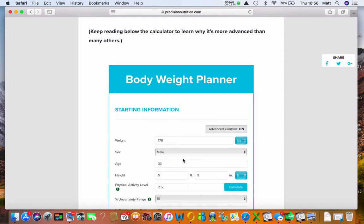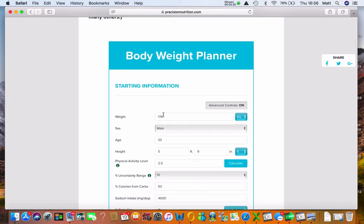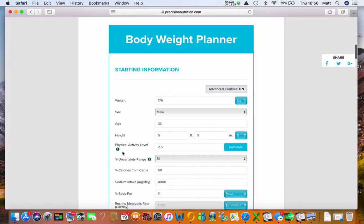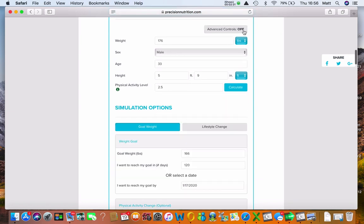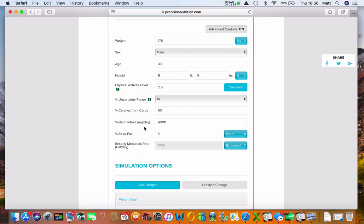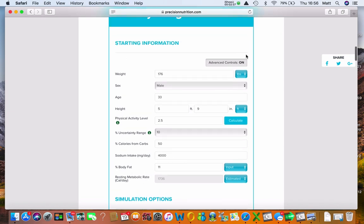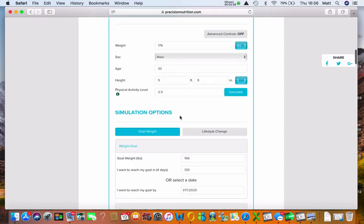Now this body weight planner, I just love it. I think it's a great tool and hats off to Precision Nutrition for getting this onto their website. I've entered in my details here: 176 pounds, male, 33 years old, 5'9", physical activity level - that's just a relative scale - pretty active at the minute just due to the training I'm doing. If we turn those variables off there, that's absolutely fine. If you want to turn them on, you've got other nutrients that you can pop in there as well.